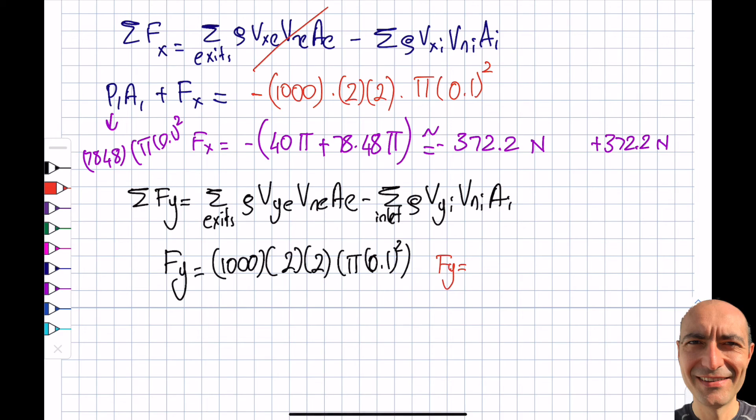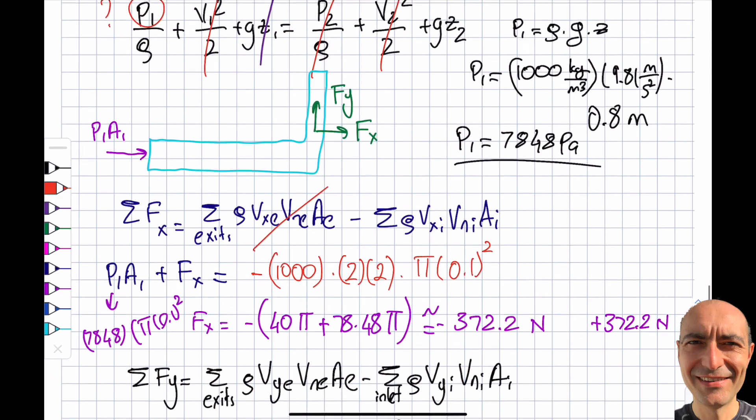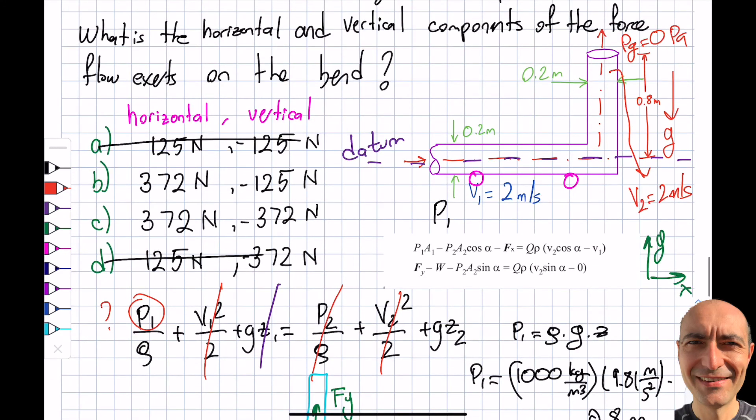Looking at this, I will get my Fy to be a positive value—you can see here this time, 40 pi, so that will be right around 125 newtons. But looking at the choices, I'll go to the same point that I made: if I put this on a roller, what will happen is this is going to shoot down. For that reason, this is going to be a negative of what I obtained, and you can see that the choice was C, this one.